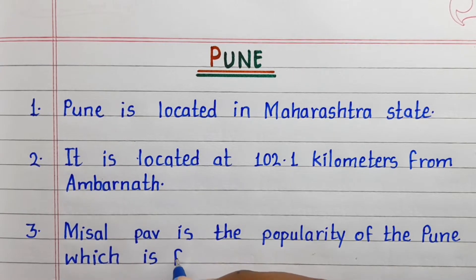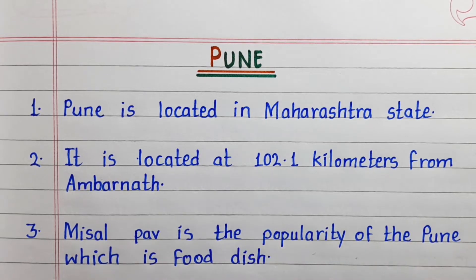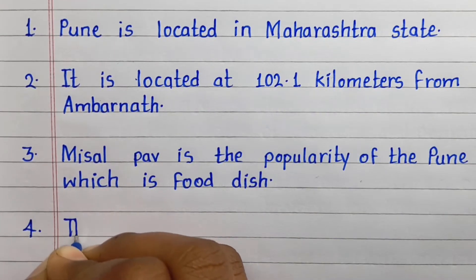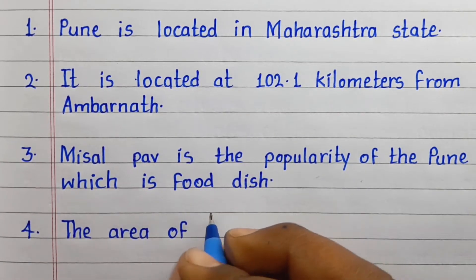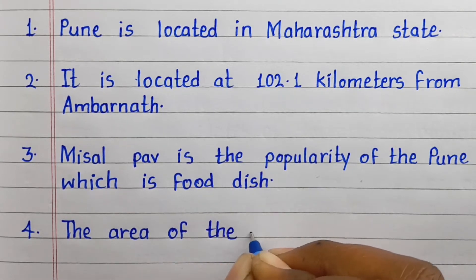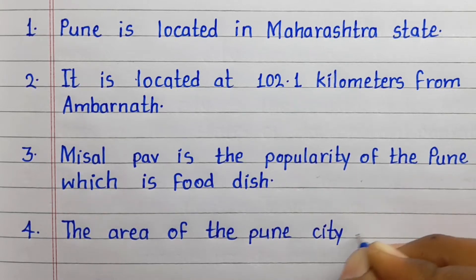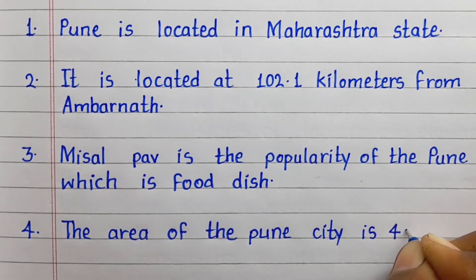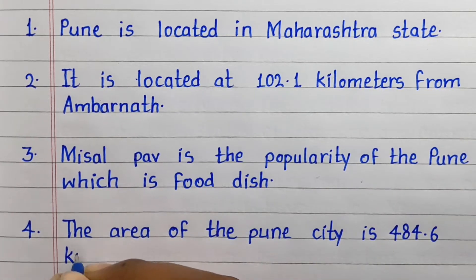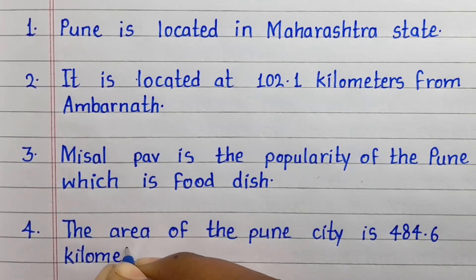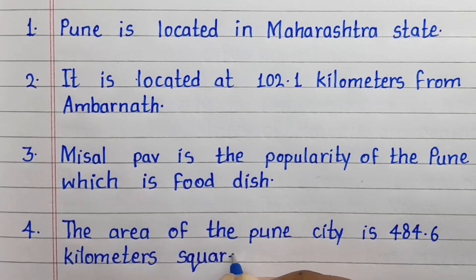Third line: Misal Pau is the popular food dish of Pune. Fourth line: the area of Pune city is 484.6 kilometers square.